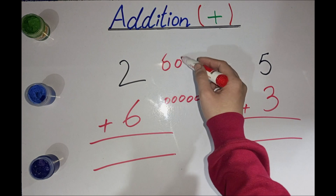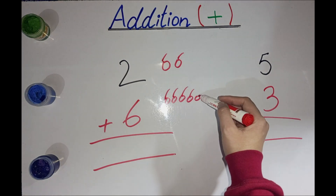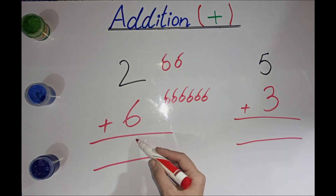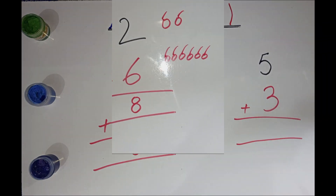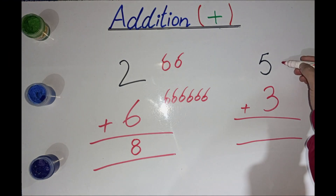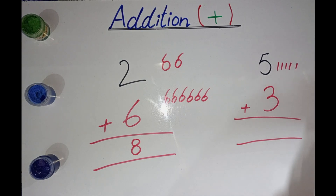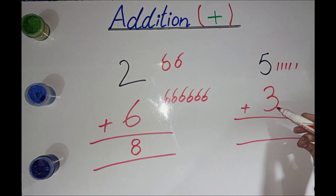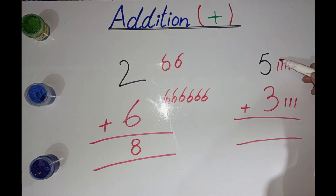One, two, three, four, five, six, seven, eight. Very good! Write it here. What is this number? Five. Now make five lines — one, two, three, four, five. What is this number? Three. Make three lines — one, two, three. Now count all these lines.